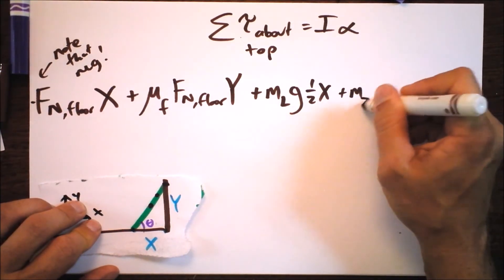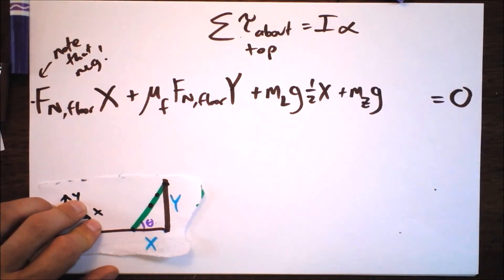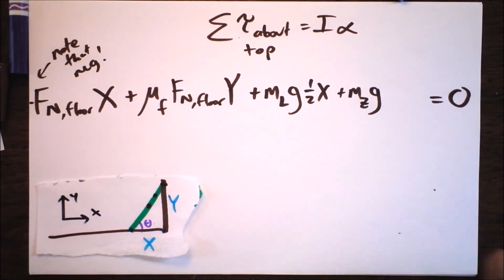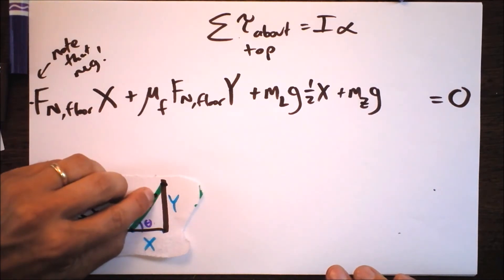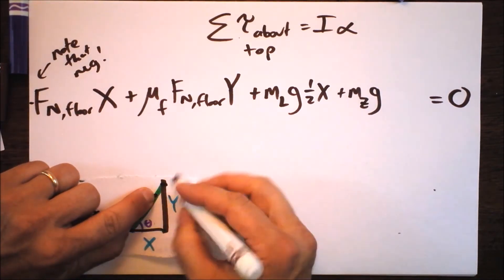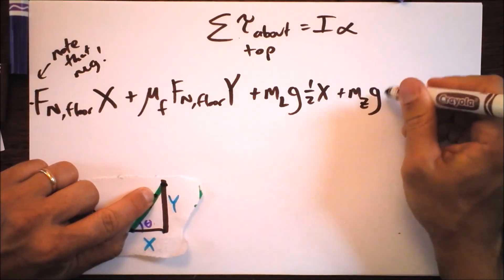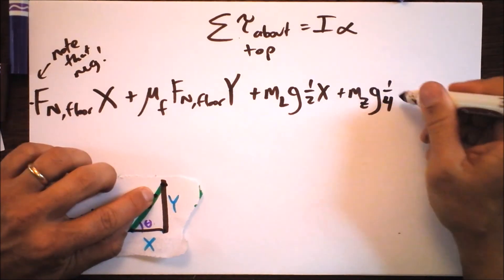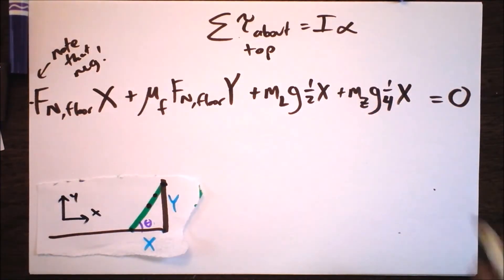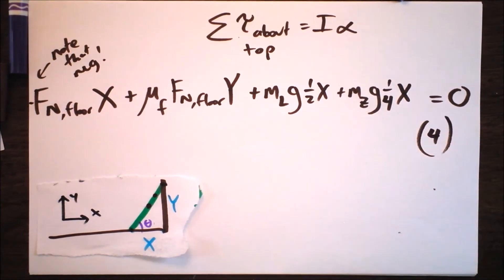And then I add in mass of the zombie times baby g times... you might think, and the first time I sketched this I wrote that it was again three quarters. But look how close it is to the axis of rotation now. Now it's only one quarter of X away. Now we actually have four awesome equations.